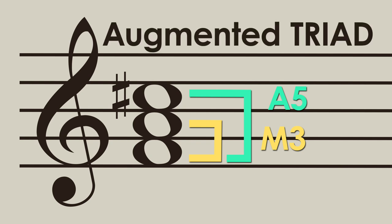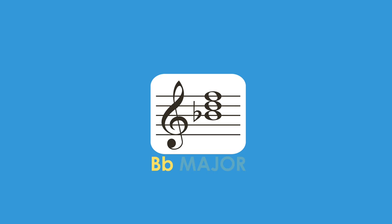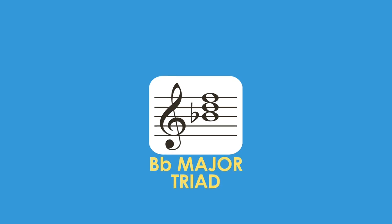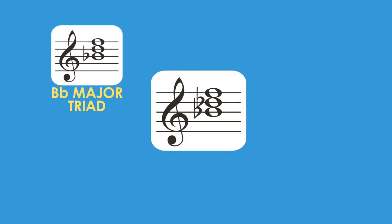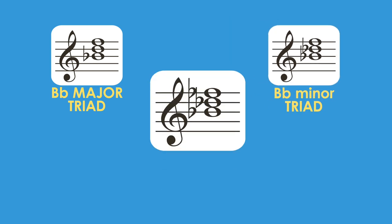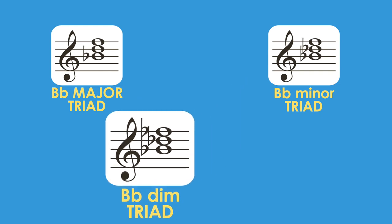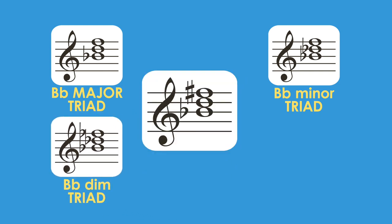Let's do another example. Here we have the B-flat major triad. If we lower the third a half step, we get a minor third, and the triad becomes the B-flat minor triad. If we also lower the fifth a half step, it's now a diminished fifth, and the triad becomes the B-flat diminished triad. If we go back to the major triad and raise the fifth a half step, it's now an augmented fifth, and the triad becomes the B-flat augmented triad.